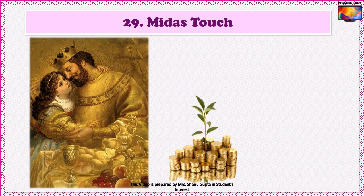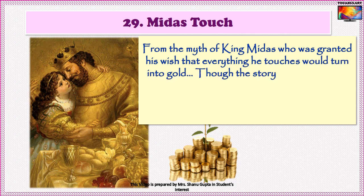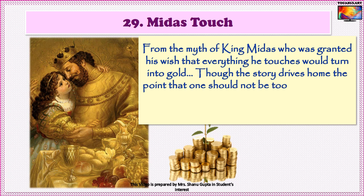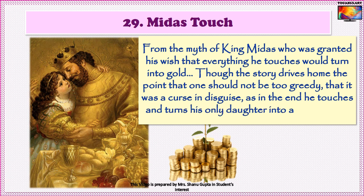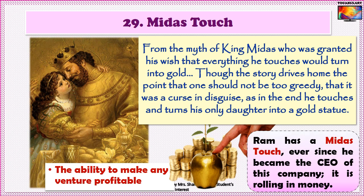Number 29 is Midas touch. Everyone knows the mythological story of King Midas who was granted his wish that everything he touches would turn into gold. Although the story drives home the point that one should not be too greedy — it was a curse in disguise, as in the end he touches and turns his only daughter into a gold statue — the meaning of the phrase refers to Midas's ability to turn everything into gold. So someone who has a Midas touch has the ability to make any venture profitable. Example: Ram has a Midas touch — ever since he became the CEO of this company, it is rolling in money.